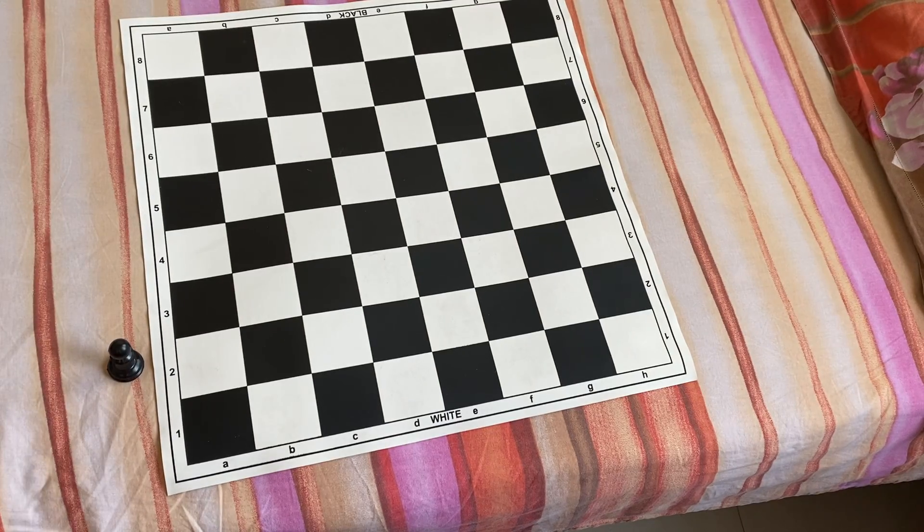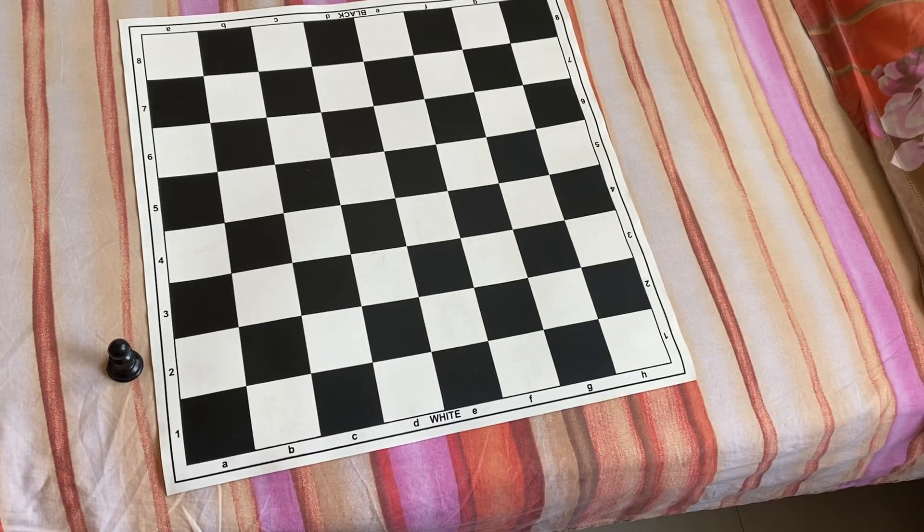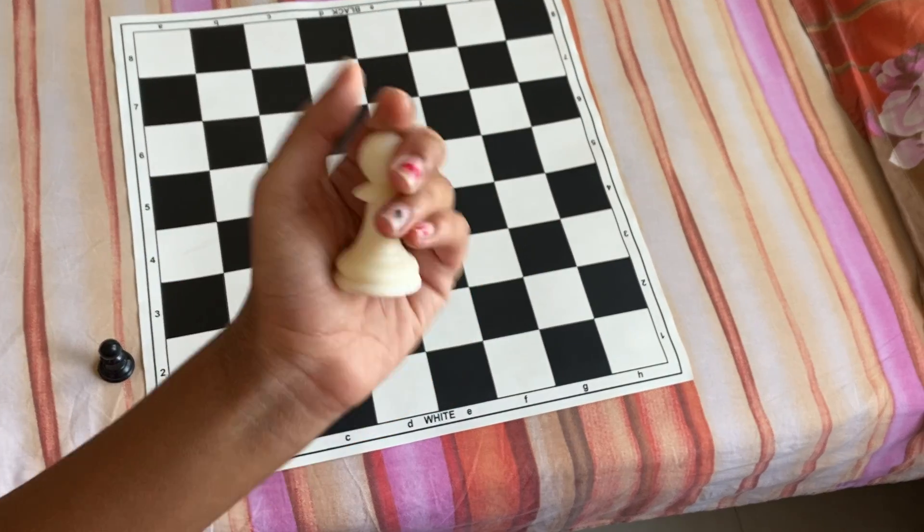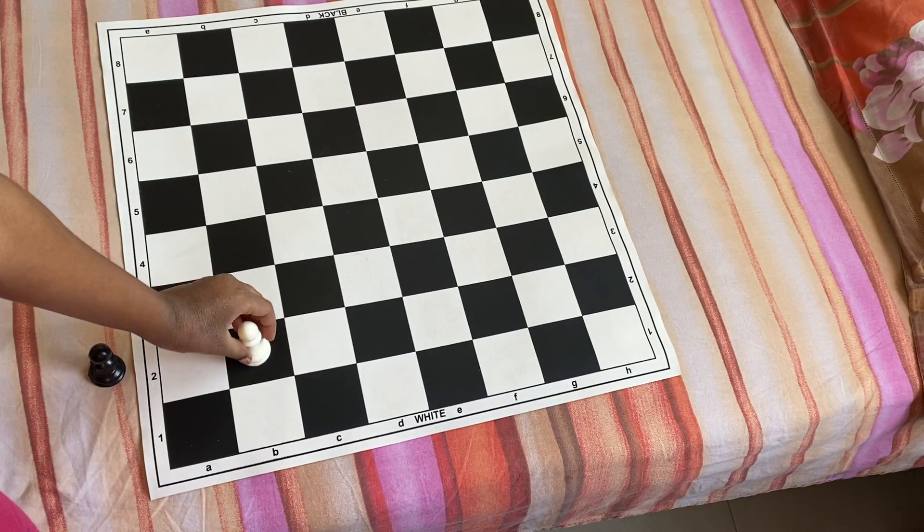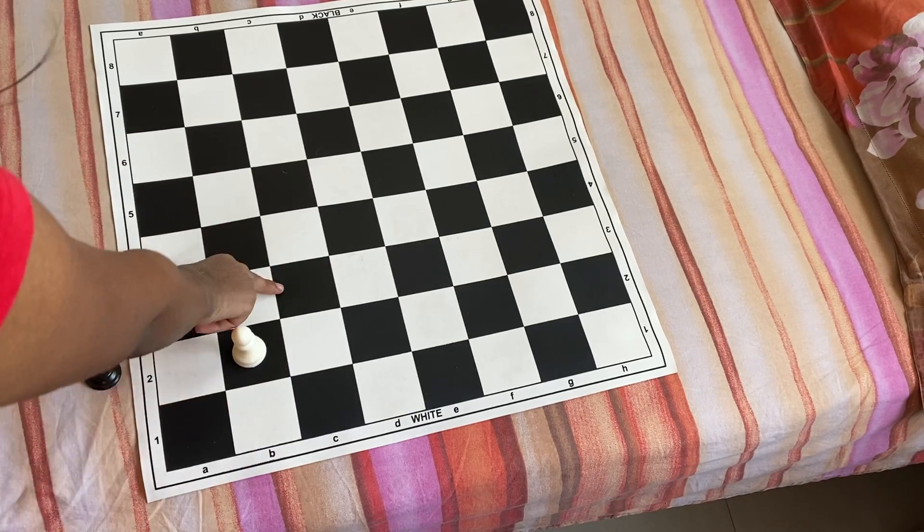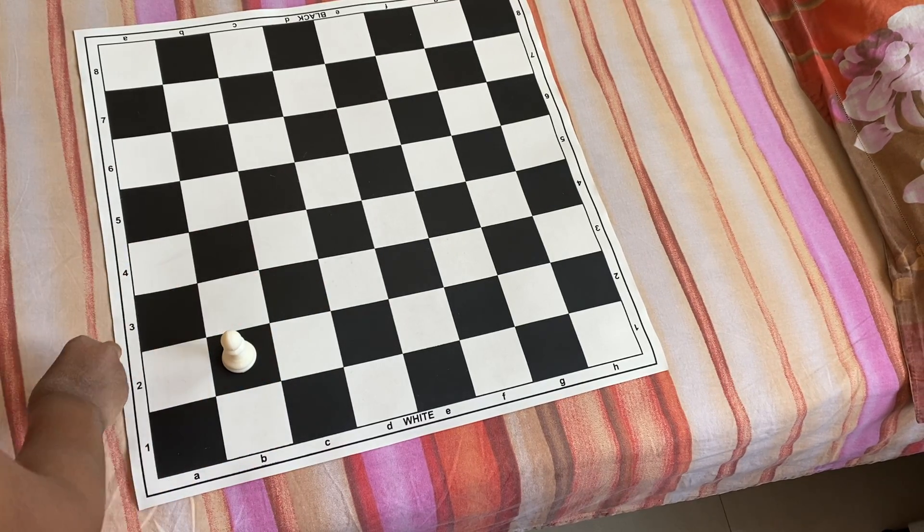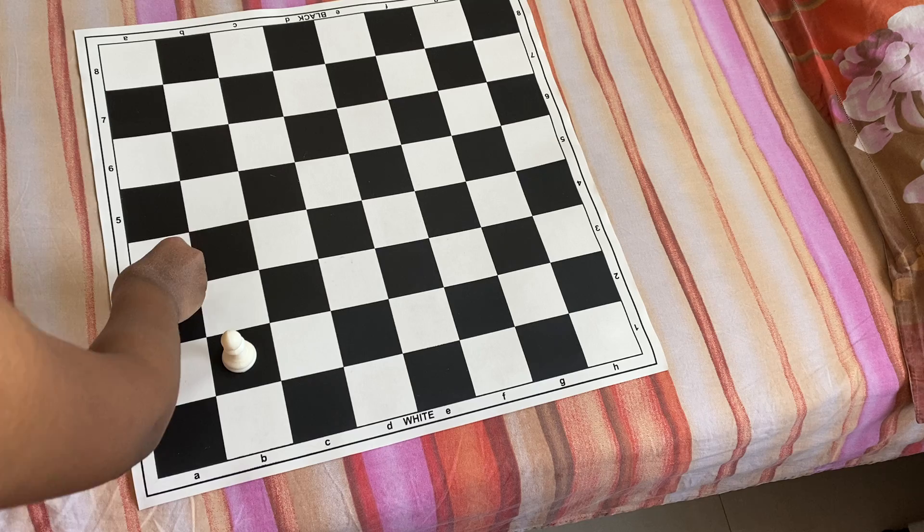Now, this is kind of confusing because whenever you kill a piece or a pawn with a pawn, it can only kill a piece when it is moving diagonally. So I will be showing you about this.